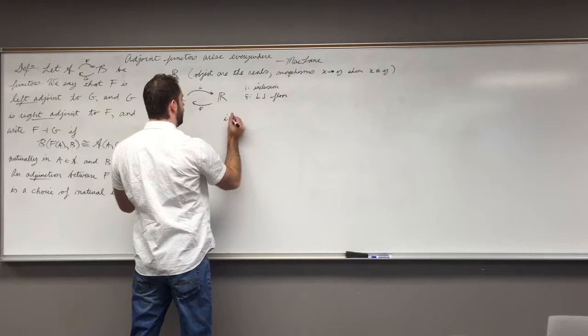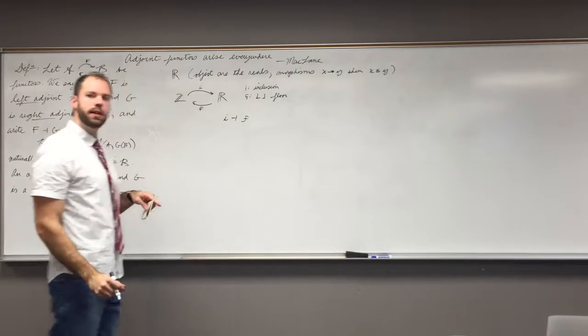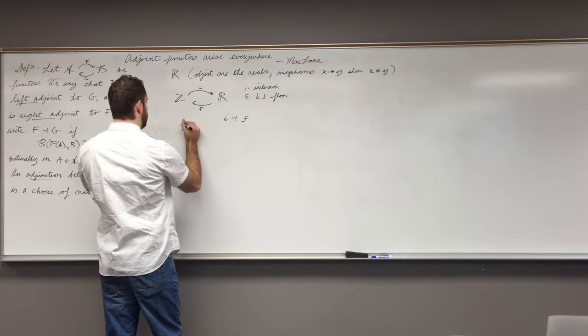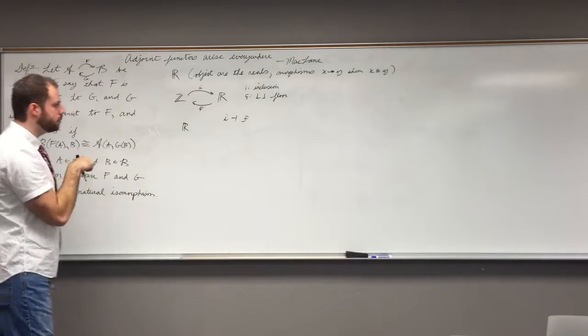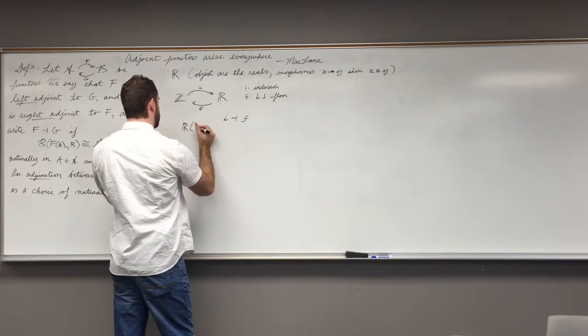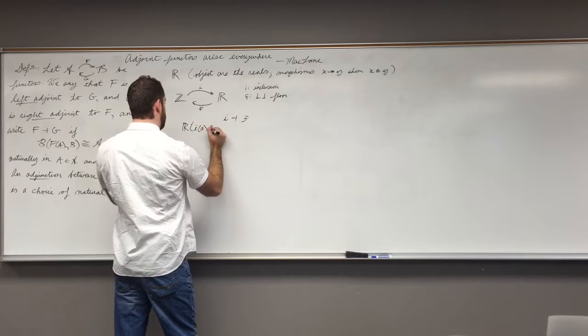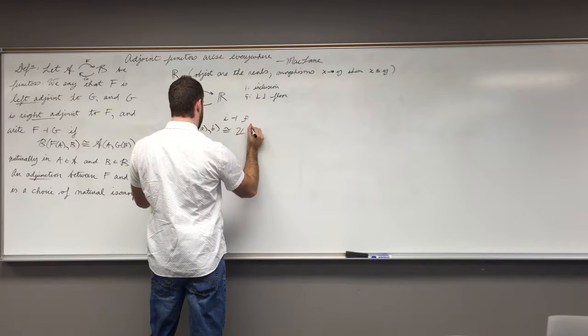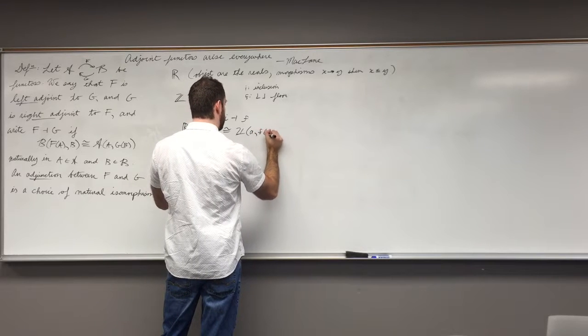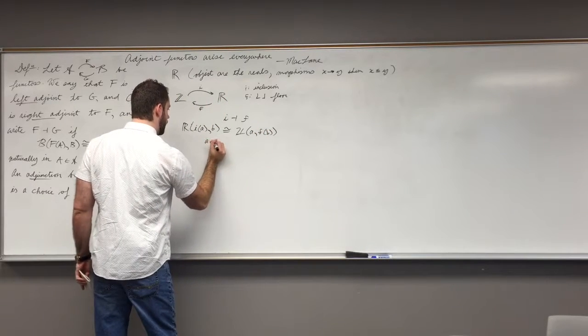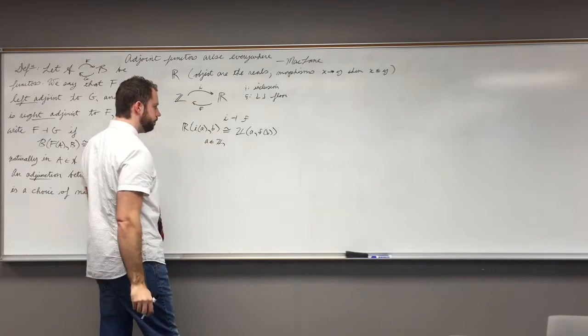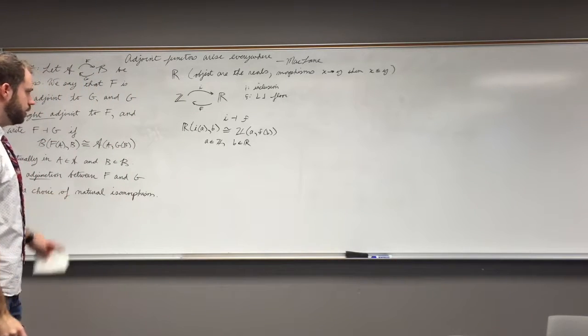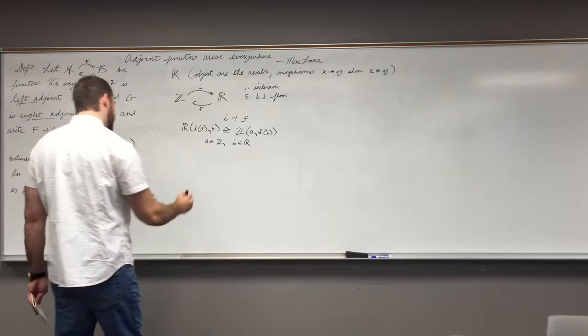So from this example, we have that I is left adjoint to F. So writing it down like this isomorphism, we have this such a thing. This is for A, an integer, and B, a real number. So to kind of get the feeling of this,